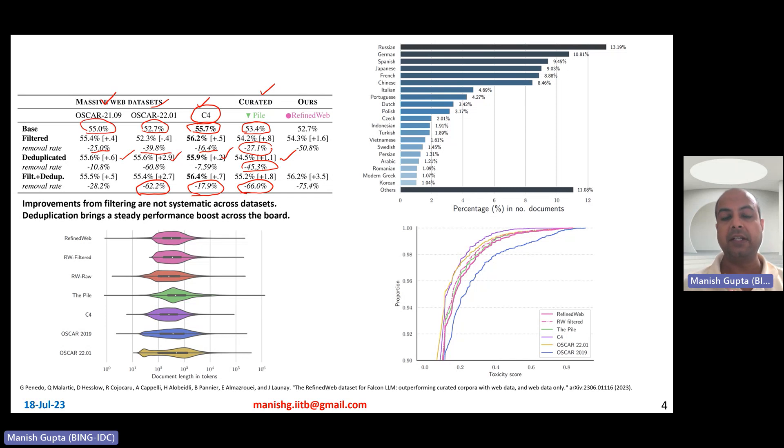Everywhere you see positive things happening if you essentially do deduplication. Deduplication brings a steady performance boost across the board. But if you actually compare about filtering, if you do filtering, in most cases you see gains after you do filtering. However, you see some losses as well. On OSCAR data set, if you filter, you actually see reduced performance in that sense. But in general, if you basically do both, you tend to observe that filtering plus deduplication, the macro data filtering pipeline actually works, and you essentially see gains across the board, across all the web data sets, public web data sets.